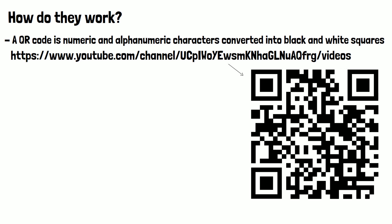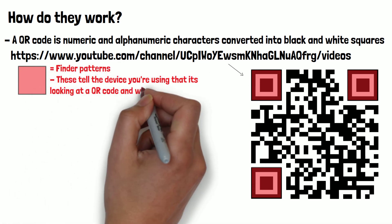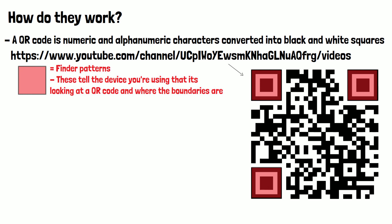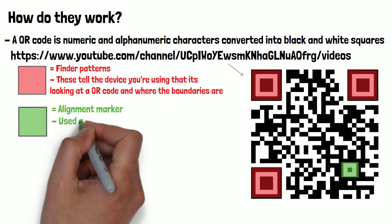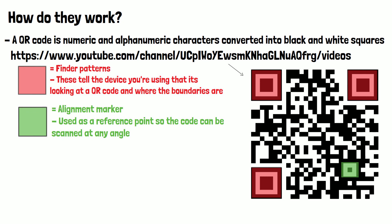When you scan the QR code with your phone or other device, the camera first picks up these three large squares called finder patterns. These tell the device you're using that it's looking at a QR code and where the boundaries are. The alignment marker here is used as a reference point, so the code can be scanned at any angle. If you try scanning one upside down, it'll still work due to this alignment marker.